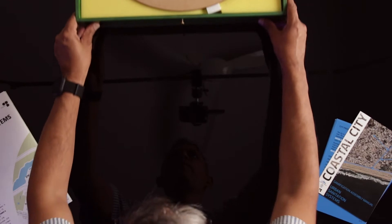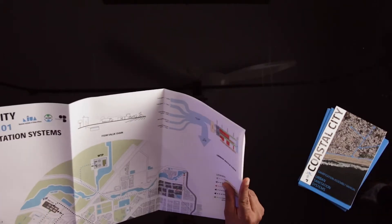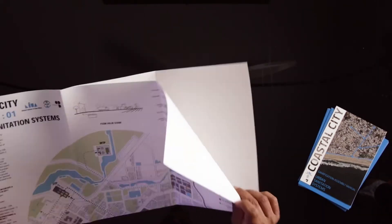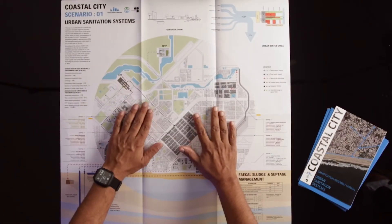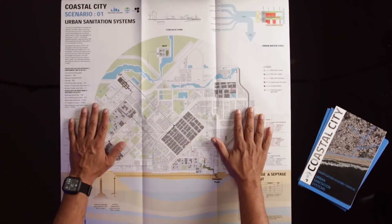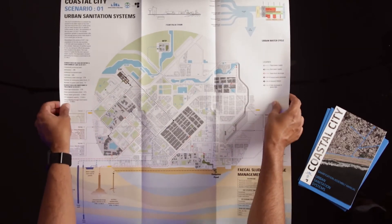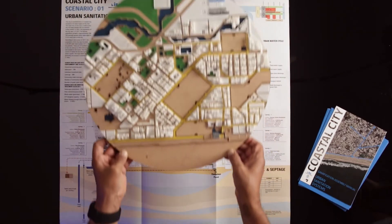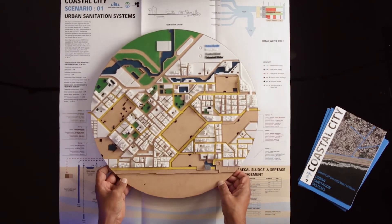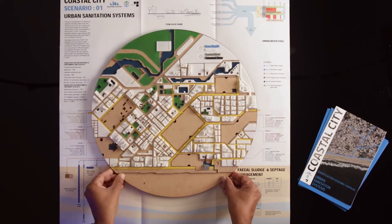Let's take the poster, open it and lay it flat on the table. As you can see, the poster consists of a map of a city, its demographic data, and water consumption and wastewater generation data. We shall place the board game on the poster in alignment to the circle.